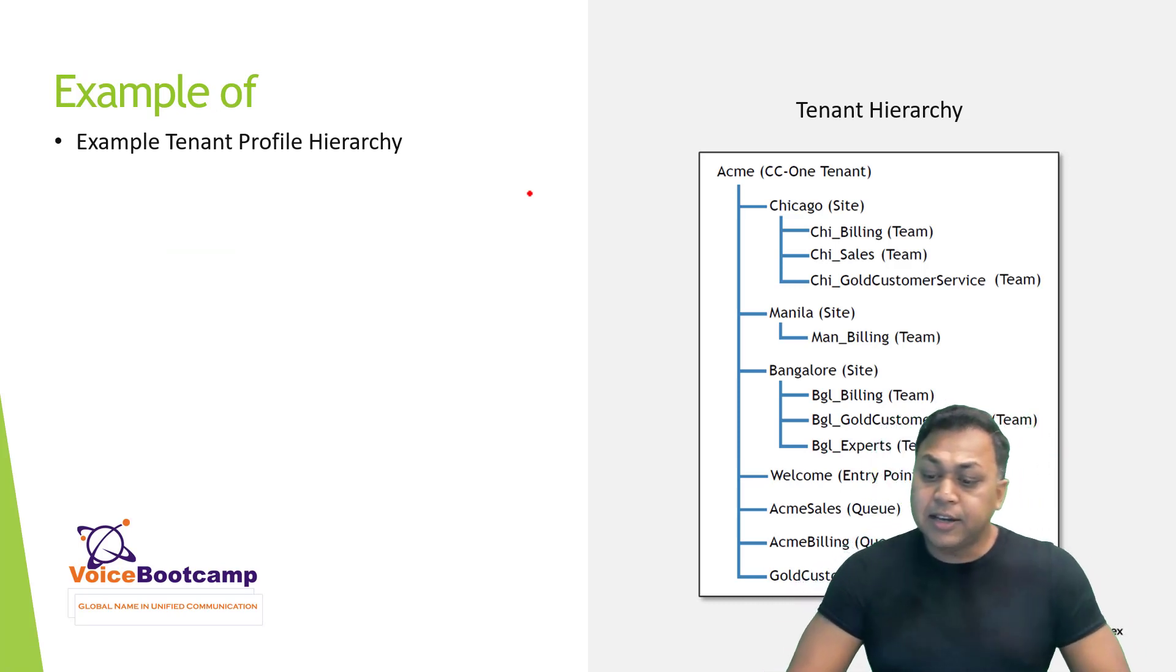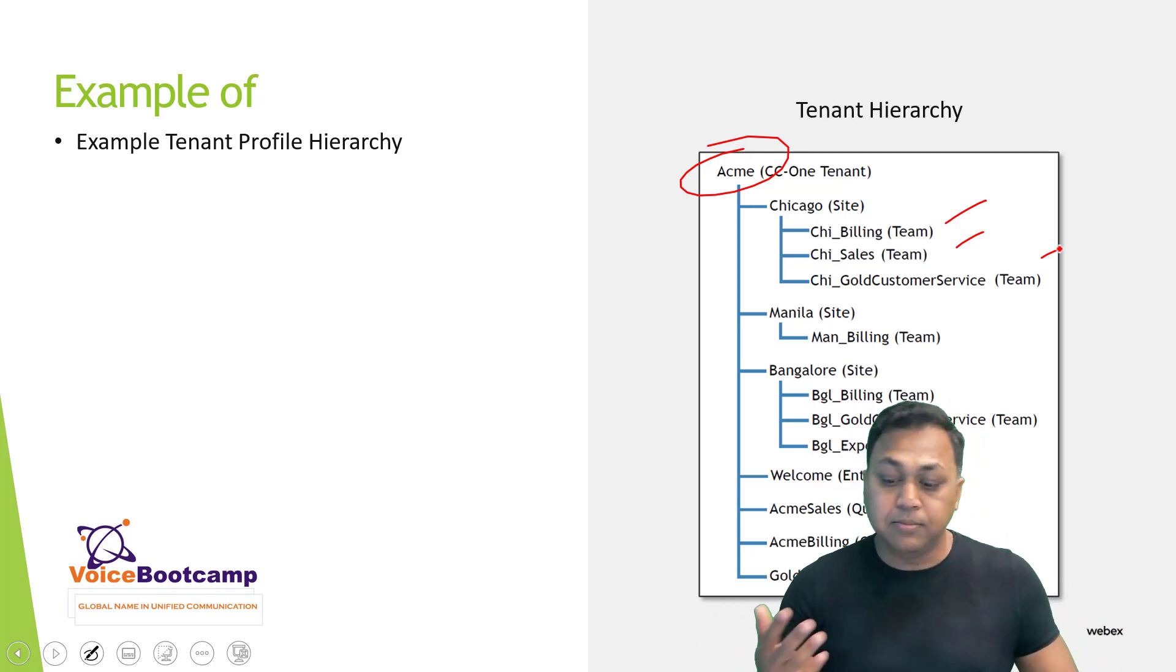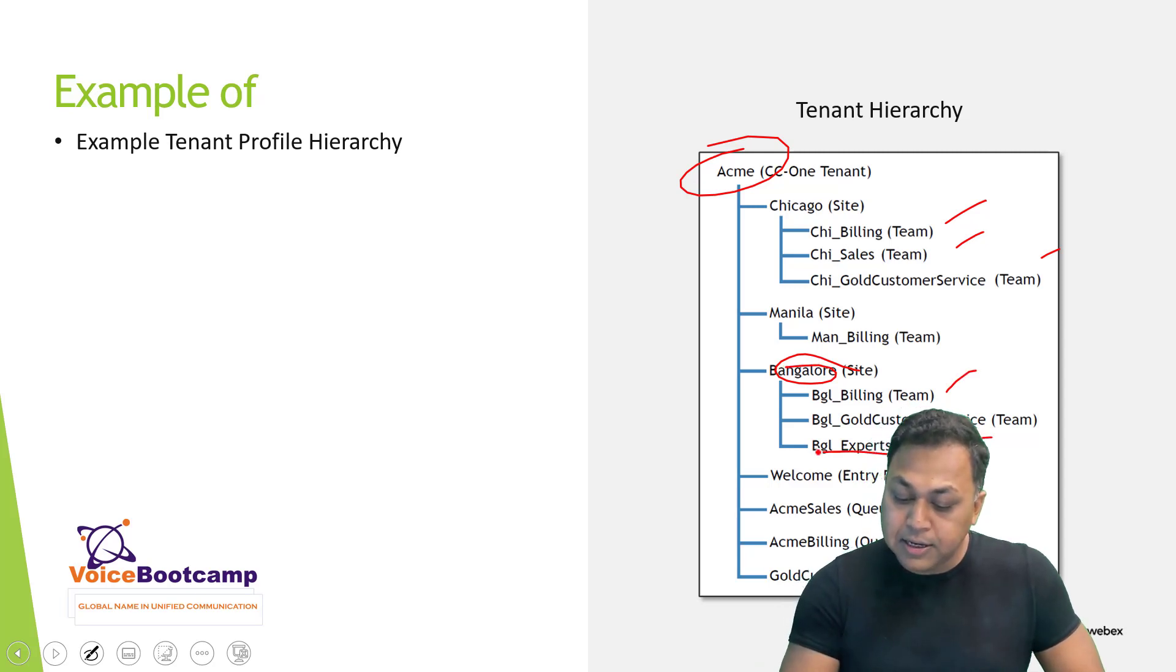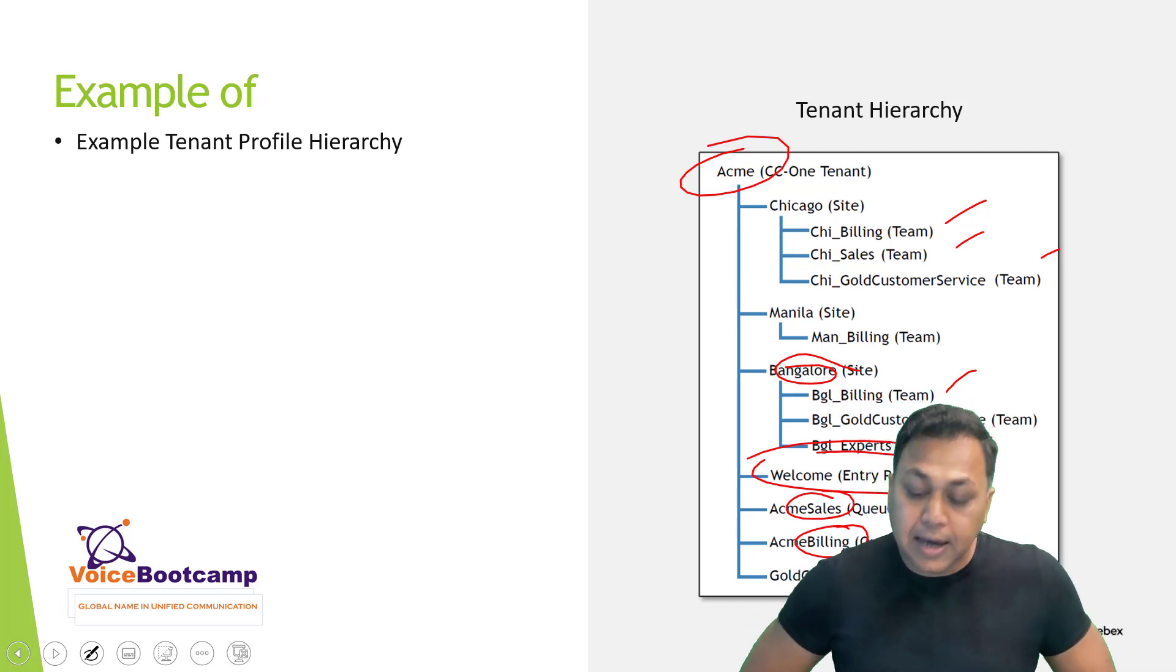In tenant hierarchy, for example, you may have a customer who may have three different locations. You could have Chicago location, Manila location, and a Bangalore location. And each location will have one or more team. You could have a sales team, support team, maybe you have a team that is designated for VIP customers. And then you have, for example, a Bangalore office could have a similar option as well. Then, as the call is coming in, you will have a welcome entry point. This is where the call will first land. Then, you press the sales, which is for sales queue, and then you go to two for billing. And last option could be, like, for example, press three for VIP services.